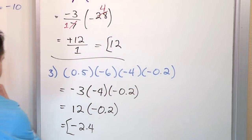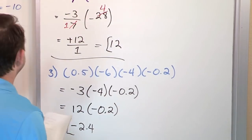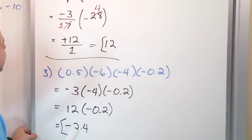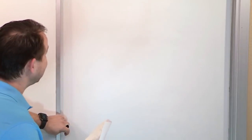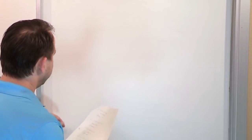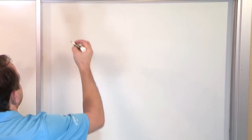So the answer is negative 2.4. Now up till now it's all been numbers and fractions. We're going to do the same kind of work, exactly the same, except we'll introduce some variables.